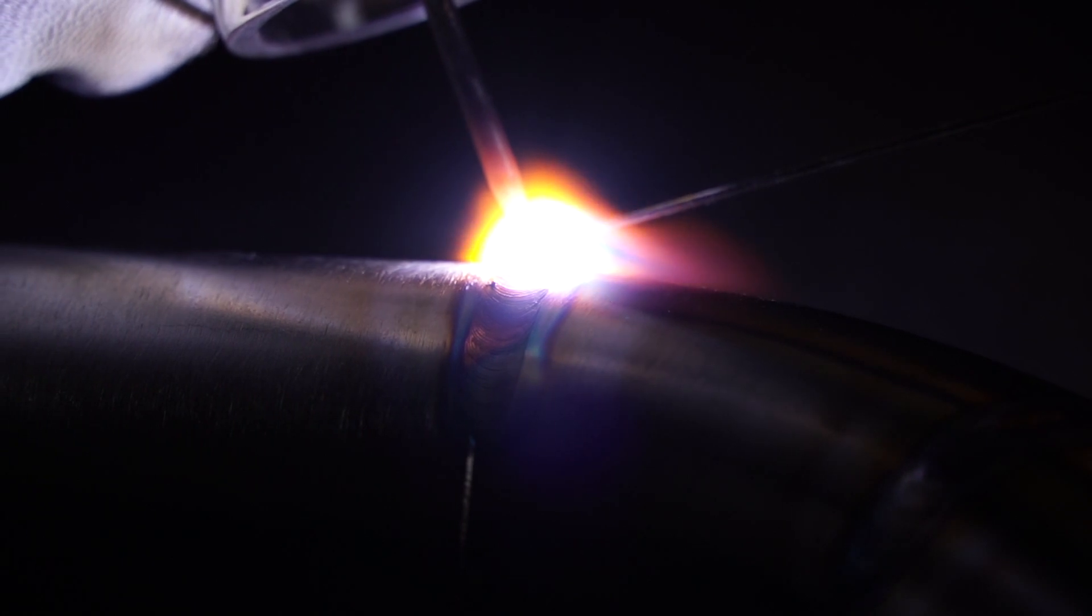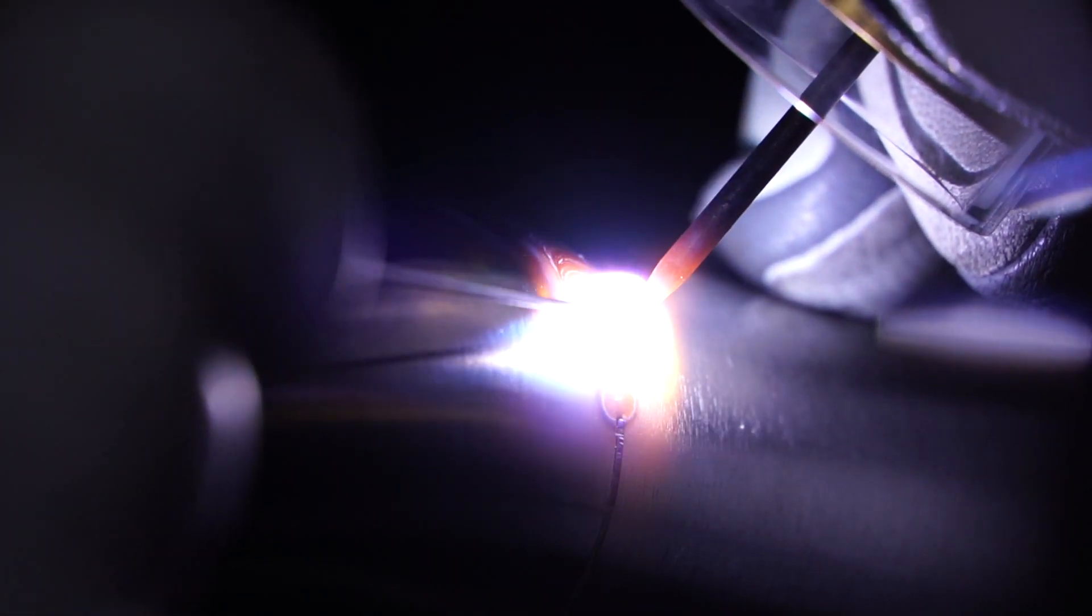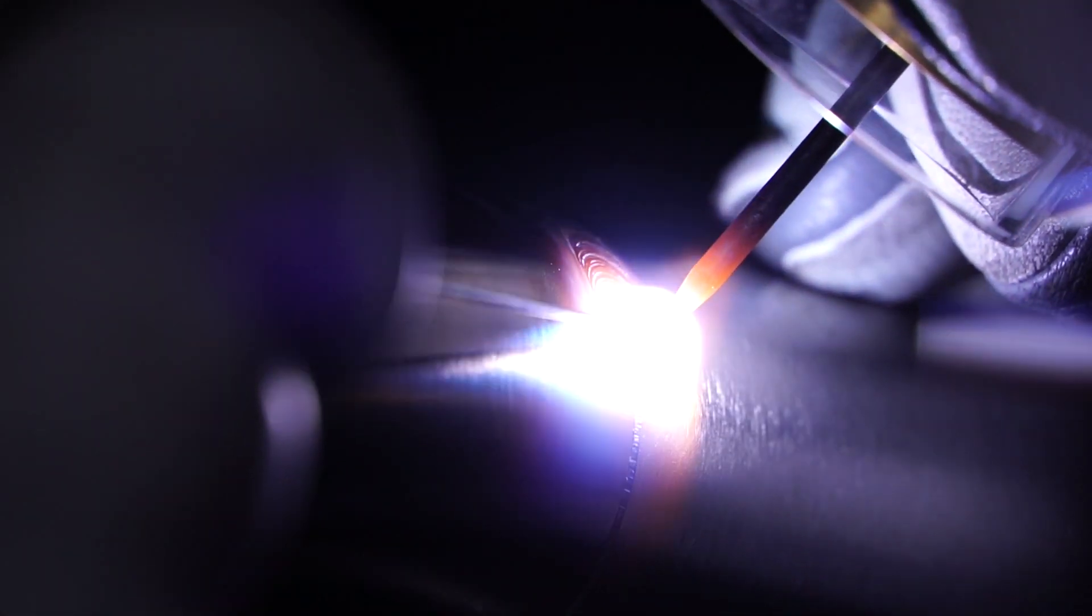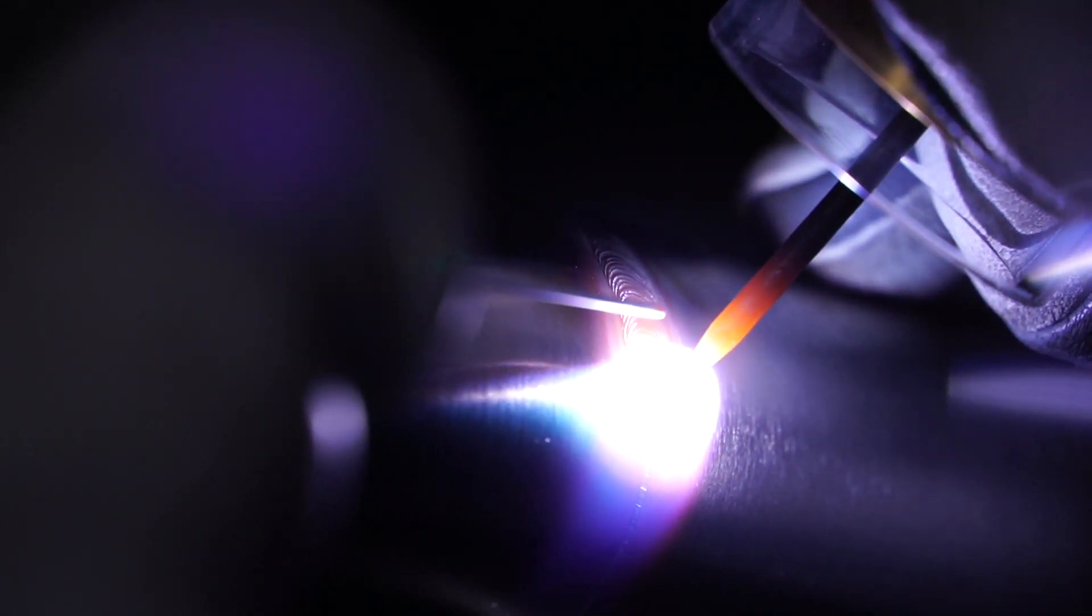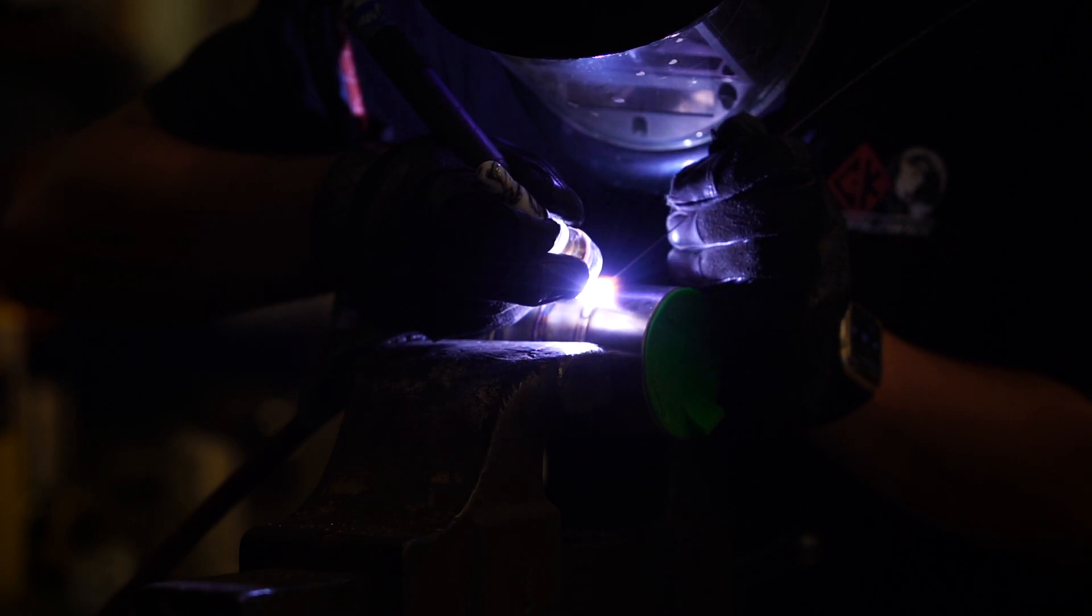Argon flow is really going to be determined by your cup size. You could be welding with a number 12 cup and use 25 CFH of argon. Maybe a 17 you'll use 35 to 40. Then you'll get up to a number 20 cup and you'll be using over 50 CFH of argon.